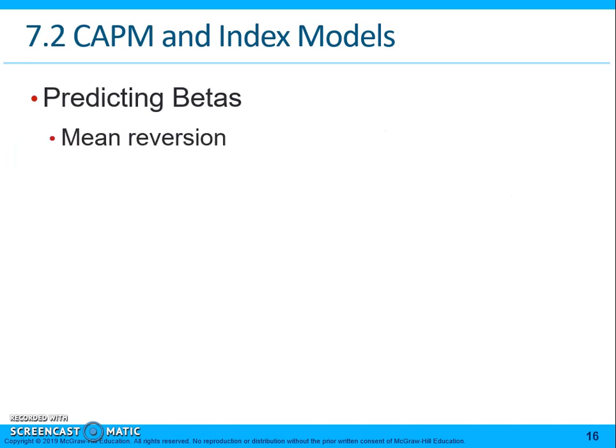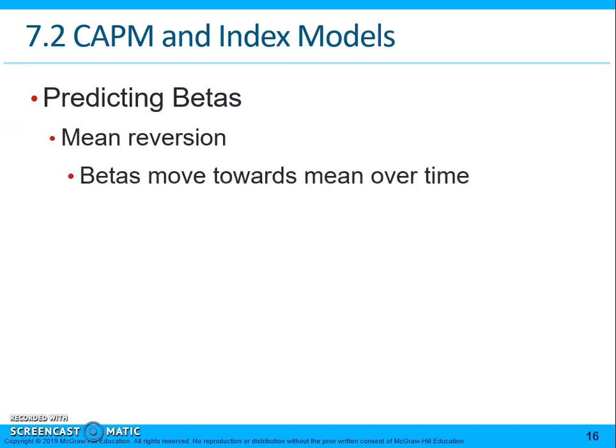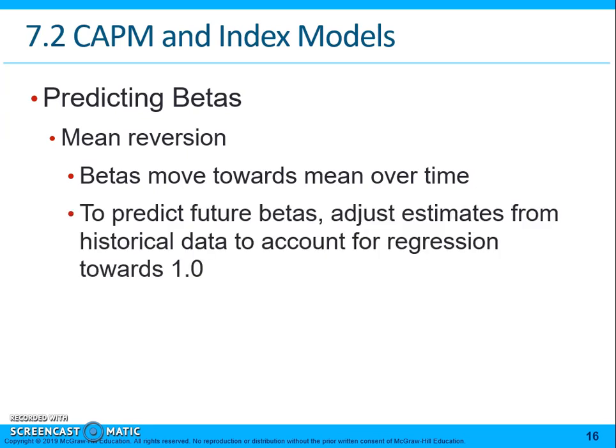Beta prediction: betas are subject to mean reversion, meaning that betas move towards a mean over time. The mean beta is the market beta of 1. So when running regressions to predict future betas, you have to adjust the estimates from historical data to account for regression towards 1.